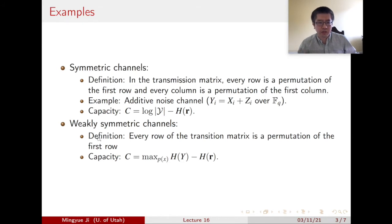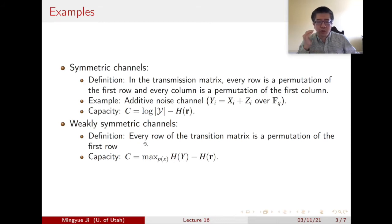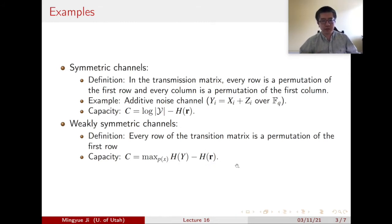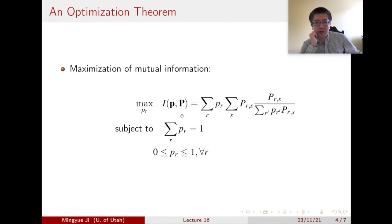Symmetric channels are also called strongly symmetric channels. We also have a definition of weakly symmetric channels — the weakest version requires only that every row of the transition matrix is a permutation of the first row, with no constraint on columns. For weakly symmetric channels, the capacity expression has a maximum over the distribution of X for the entropy of Y instead of the log cardinality of Y, while the second term (the row entropy) remains the same.